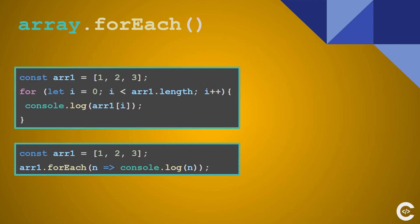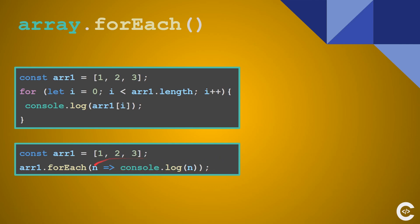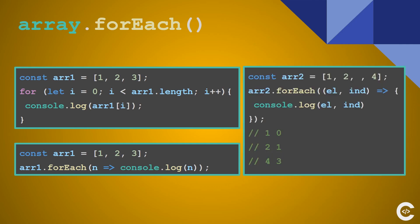forEach is probably the most common method and you are using it every day. It made our life much easier because we don't need to keep track of an index variable i and printing all elements of the array is really simple. But it has one gotcha — if you have sparse values in the array, forEach doesn't print them. The element at index 2 was completely skipped because it was empty.